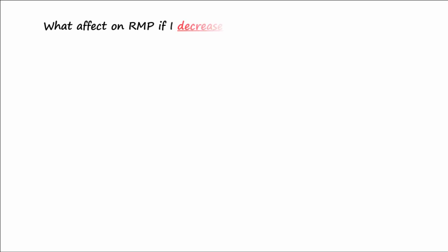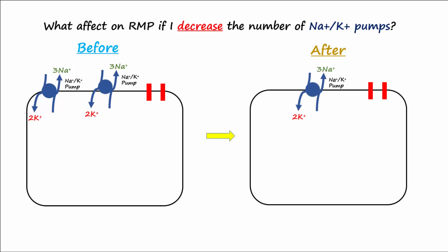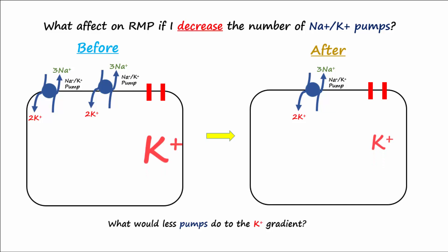Another question: what would happen to the RMP if the number of sodium-potassium pumps in the membrane decreased? Remember that the sodium-potassium pump establishes the gradients for sodium and potassium. The potassium gradient is very important for establishing the resting membrane potential. Since the pumps pump potassium into the cell, fewer pumps would make the concentration of potassium inside the cell a little lower.